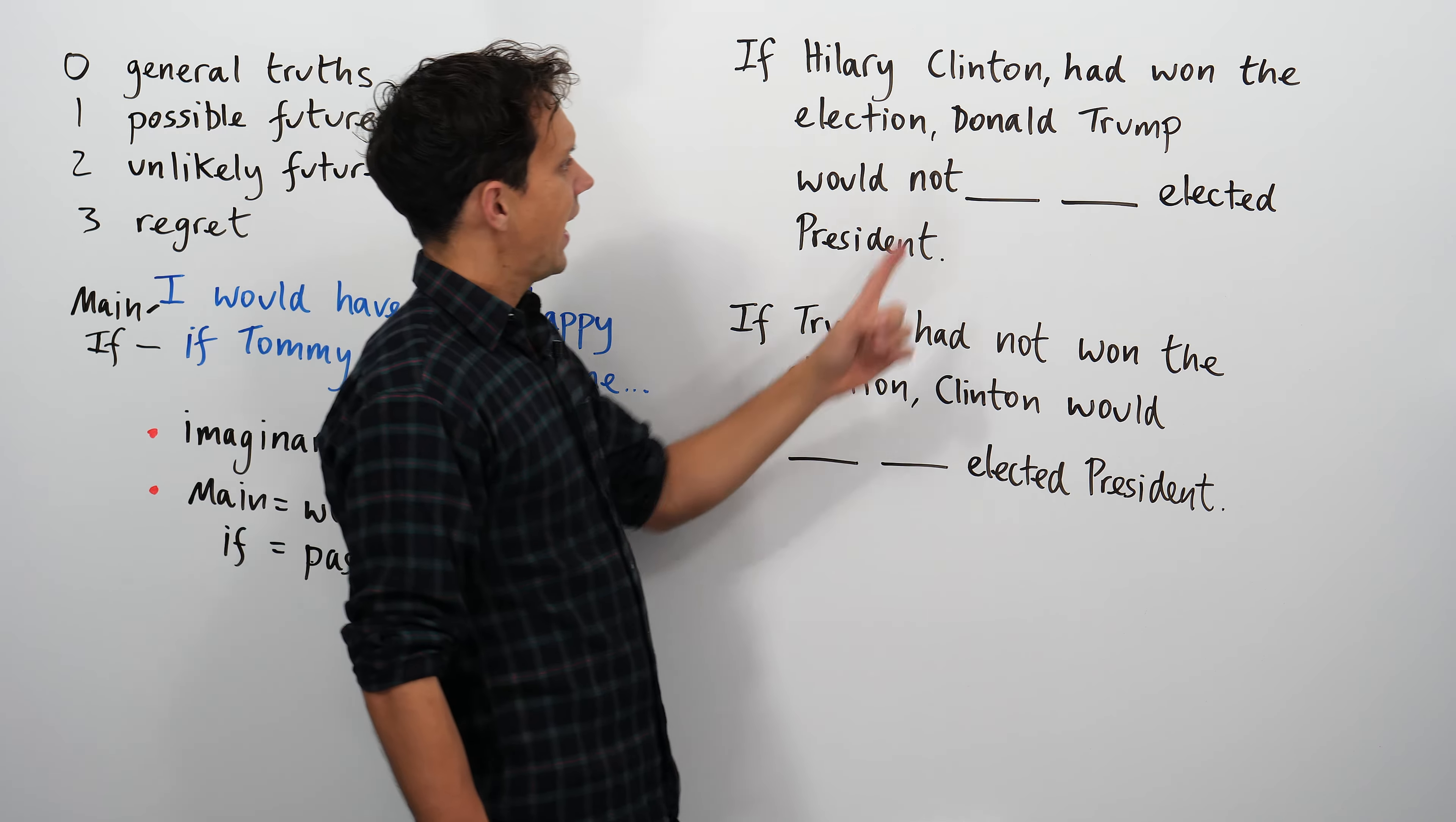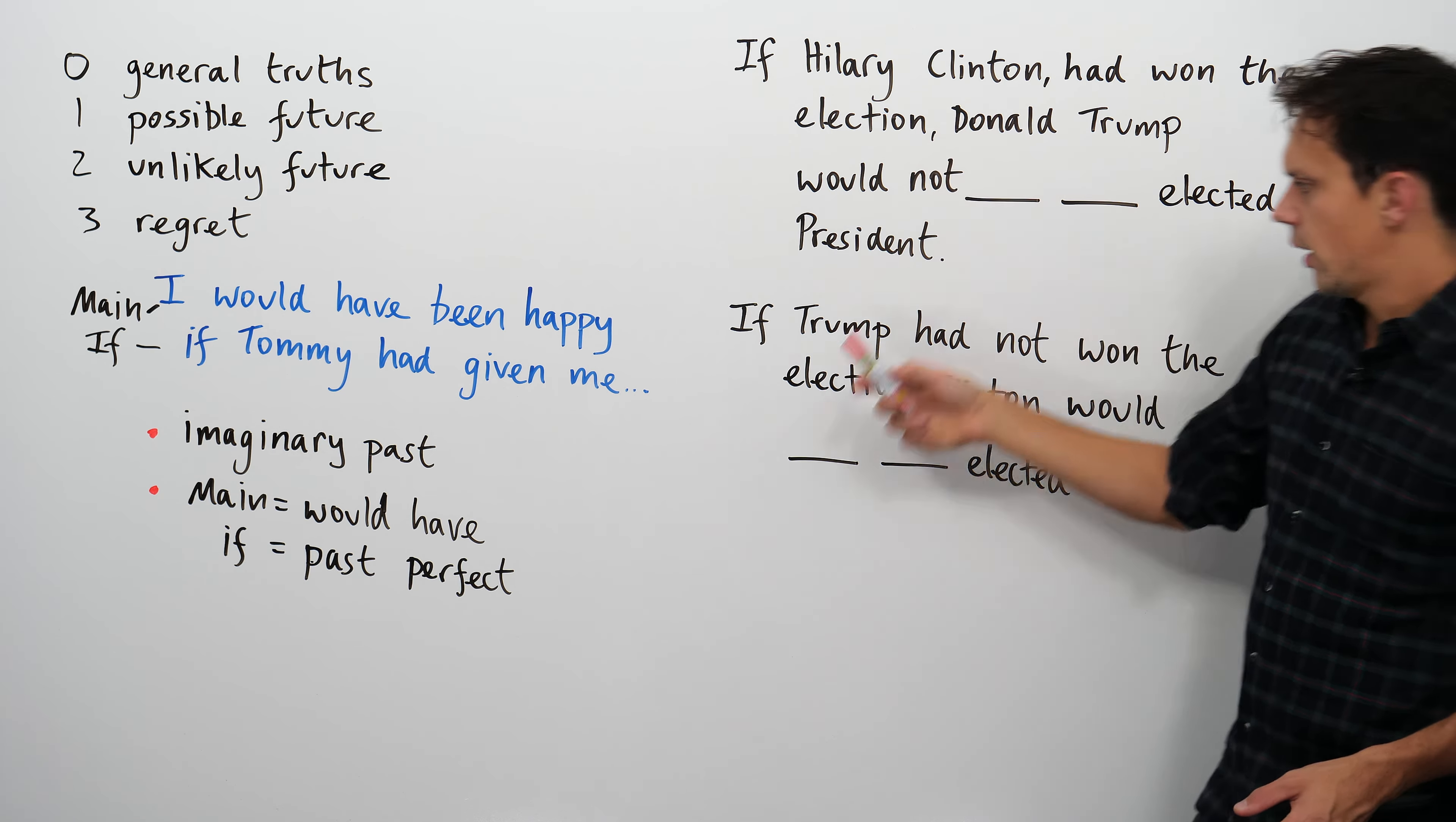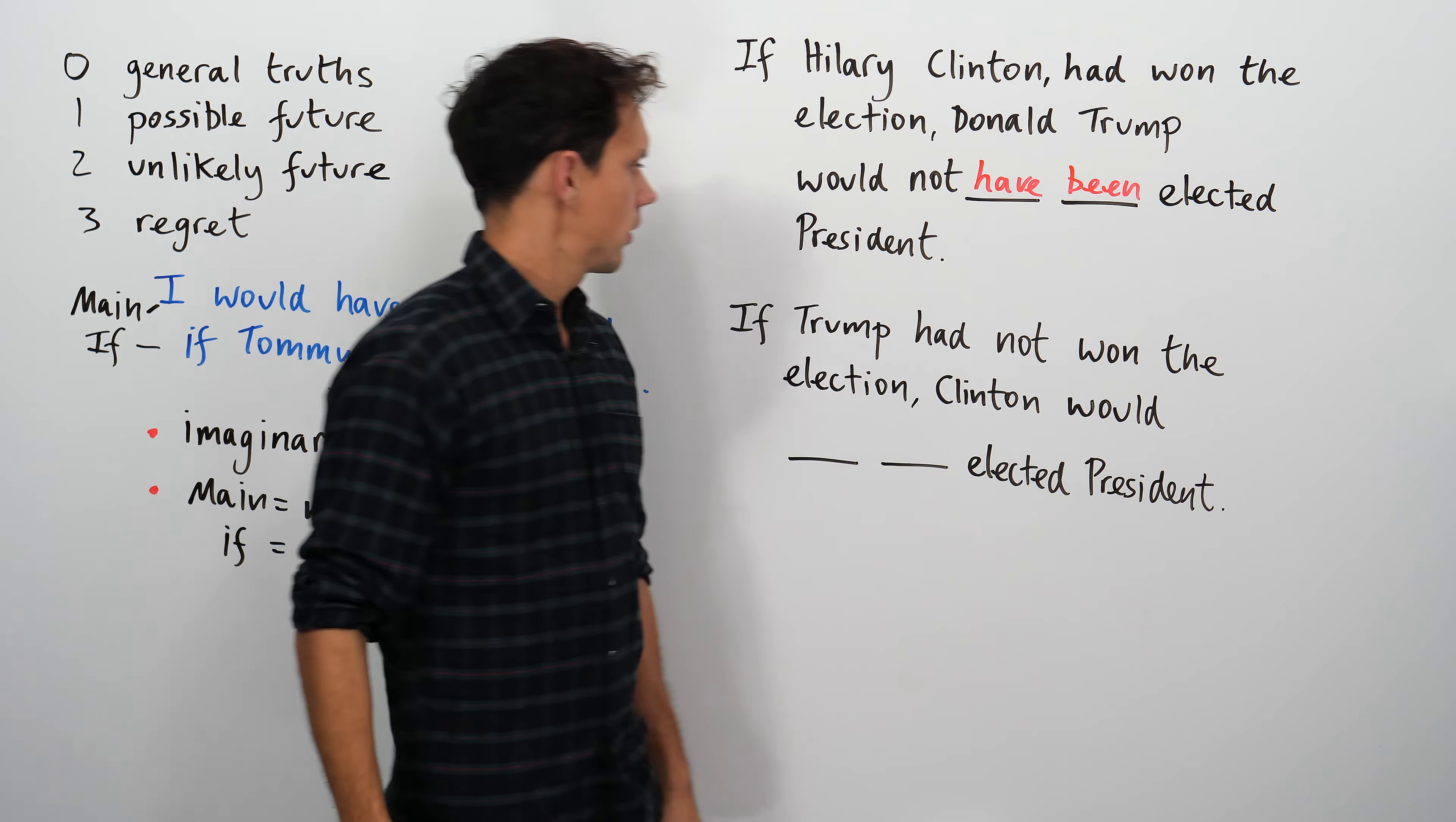If Hillary Clinton had won the election, Donald Trump would not... would not. So we need some help. If Hillary Clinton had won the election... So this is the if clause here. That's past perfect. Had won. So we need... What we're looking at here is the main clause. So we need sort of would have. Would not have been elected president.